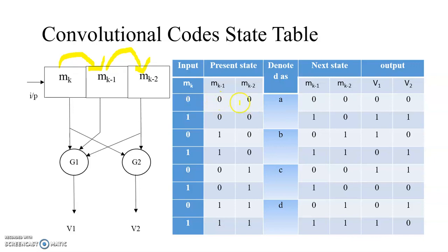So 0 XOR 0 XOR 0 is V1, and V2 is 0 XOR 0. There are four states: A, B, C, D. State A is 0,0; state B is 1,0; state C is 0,1; and state D is 1,1. For each state, there is a combination of two inputs, 0 and 1. All the states have a combination of 0 and 1.